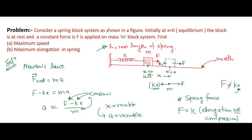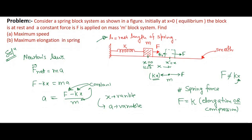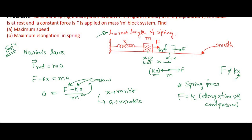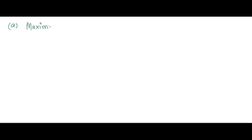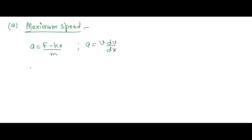As discussed in the previous class, we handle variable acceleration problems using the substitution a = v·dv/dx. So we replace acceleration with v·dv/dx, giving: v·dv/dx = (F − kx)/m. Rearranging: m·v·dv = (F − kx)·dx. This is a simple differential equation.